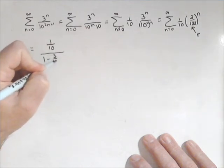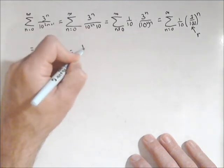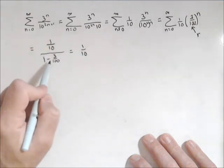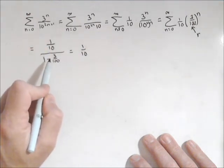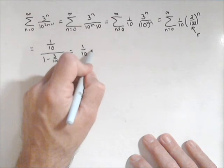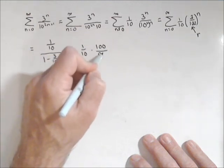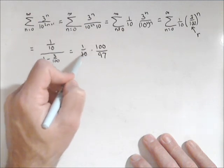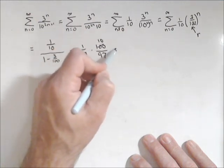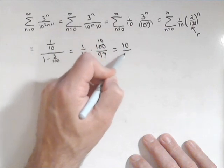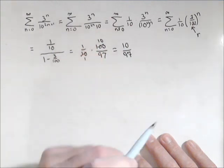1 minus 3 over 100 equals 1 tenth. This is going to be 97 hundredths. Dividing by it is the same thing as multiplying by the reciprocal, so 100 over 97. We can do a little bit of canceling here.